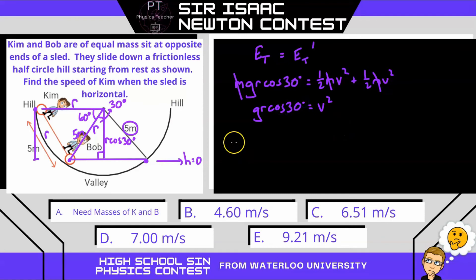Or solving for v, v will be the square root of g r cos 30, where g is 9.8 meters per second squared, r is 5 meters times the cos of 30 degrees. And we can calculate that speed to be 6.51 meters per second. Our answer is C.